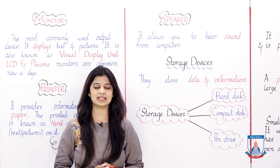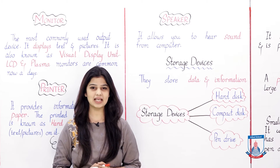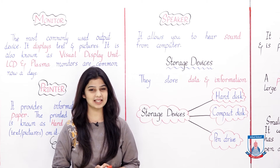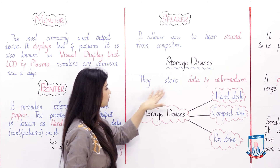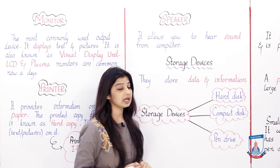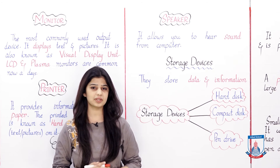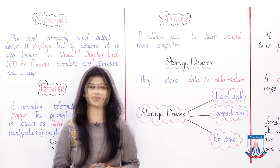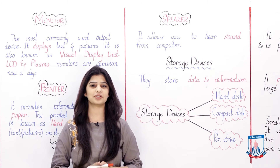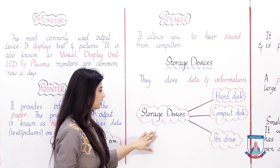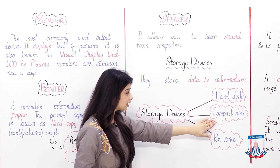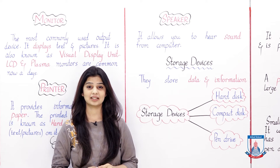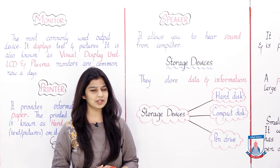I hope you understand the output devices correctly. Next, we are going to learn about Storage Devices. Storage devices store data and information. Where is data and information kept? It is in storage devices. In today's lecture, we will read about three storage devices: Hard Disk, Compact Disk, and Pen Drive. Let's see what these three devices are and what they do.